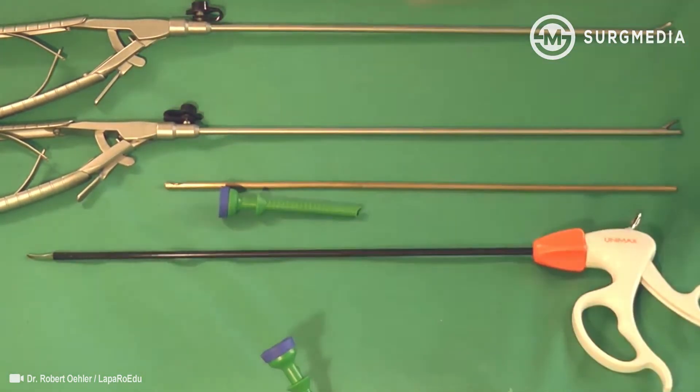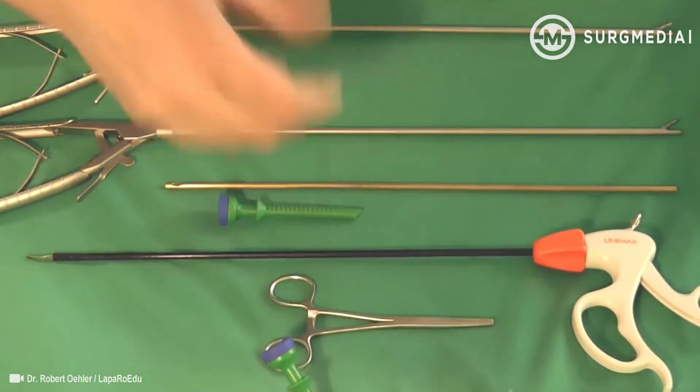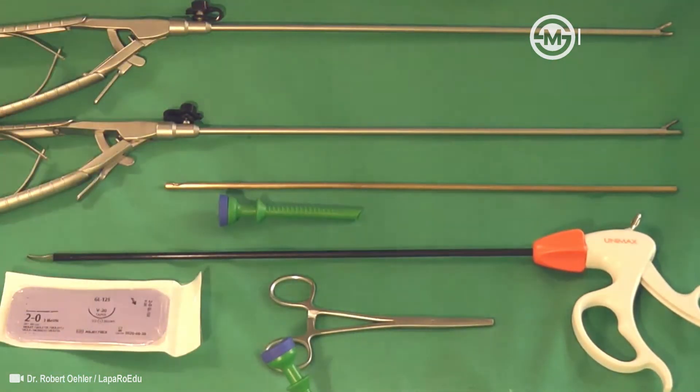We need two needle holders, a closed-end nut pusher, an extra 5mm trocar, scissors, a forceps, and a suture.